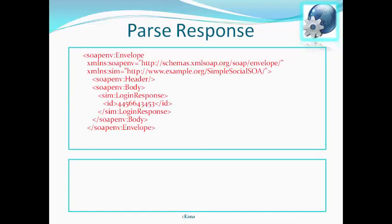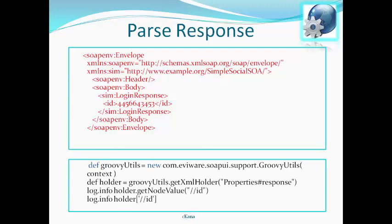To parse a response, suppose we have a particular response and we have added a properties test step with a property called 'response'. To get the ID from the response, you first create a groovyUtils object, then use getXmlHolder to get the XML for this response, and then use getNodeValue to get the first value found with the set XPath, which is ID. The XPath is passed as the argument, and this is how we get the ID from a particular response.